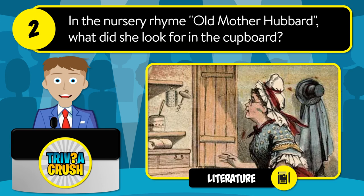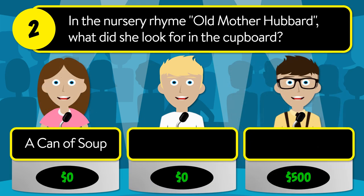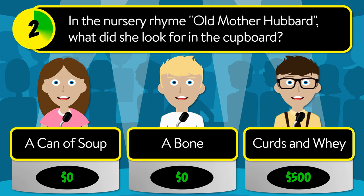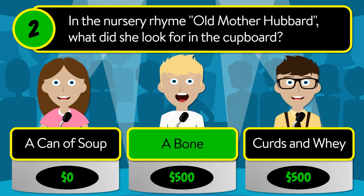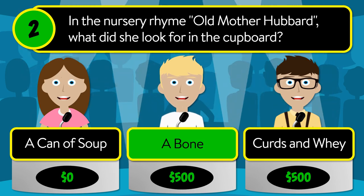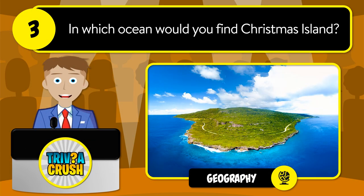Question number two: in the nursery rhyme 'Old Mother Hubbard,' what did she look for in the cupboard? Was it a can of soup, a bone, or curds and whey? The correct answer is a bone.